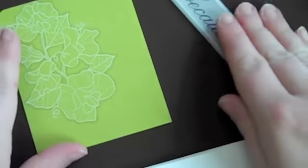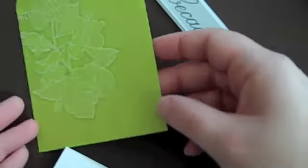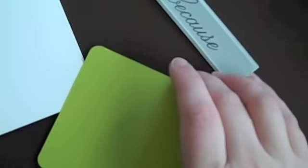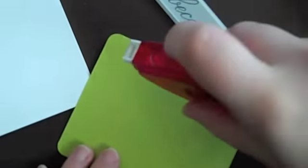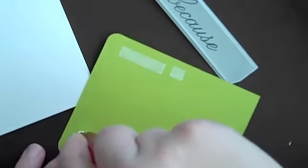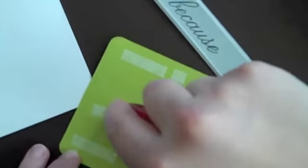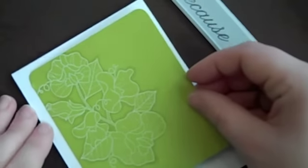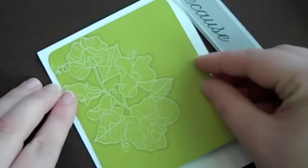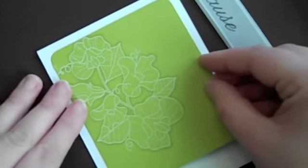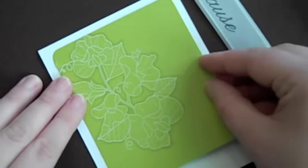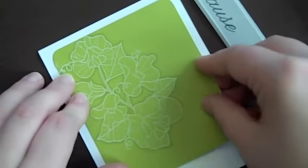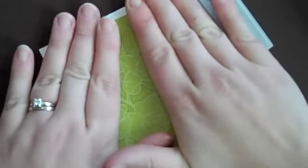I'm taking the focal point that we prepared earlier and applying adhesive to the back. I'll adhere this to the front of my white card base. When you're doing a clean and simple project like this, it's important to take the time to make sure everything's squared up and straight.